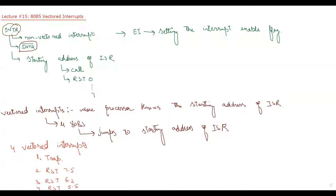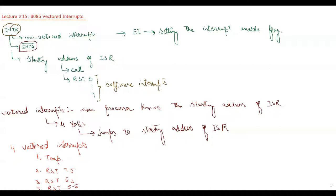However, there are also software interrupts — for example, RST 0 to RST 7. These are software interrupts, meaning we don't have a dedicated pin for them; they are raised inside the program by the programmer. Among the five hardware interrupts — INTR, Trap, RST 7.5, RST 6.5, and RST 5.5 — INTR is a non-vector interrupt and these four are vector interrupts.